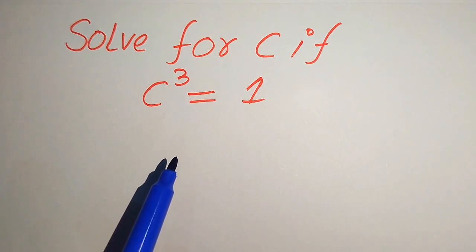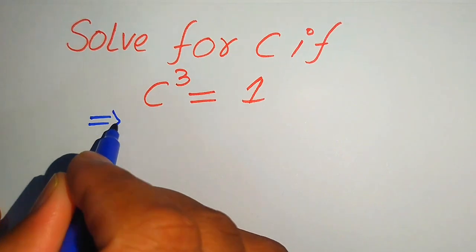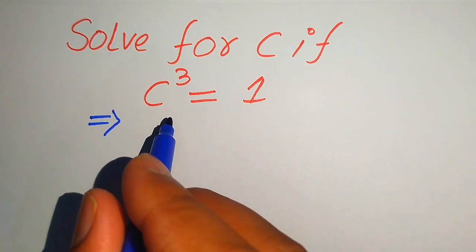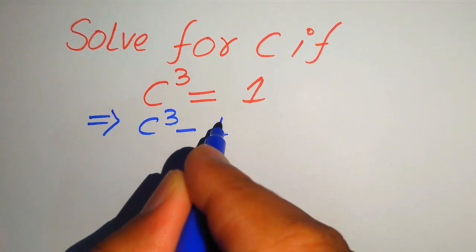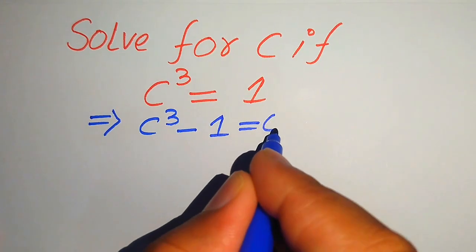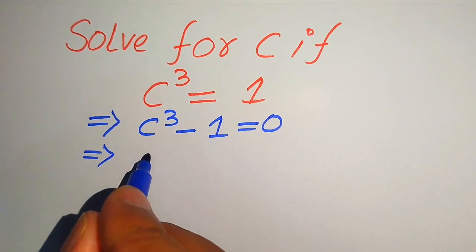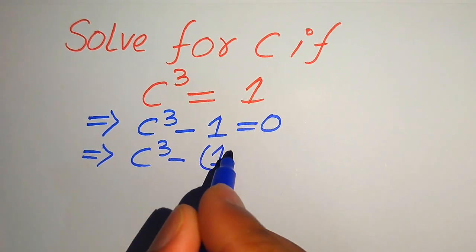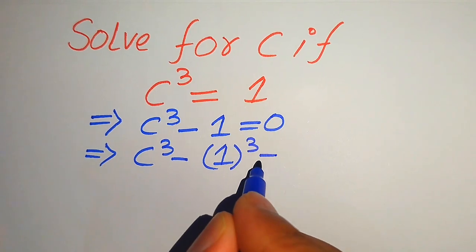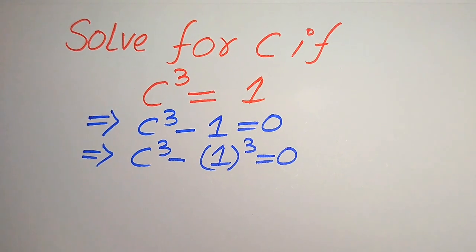The very first thing we are going to do is rearrange the terms. We move 1 from the right hand side to the left hand side, and it will be written as c cubed minus 1 equals to 0. We rewrite this equation as c cubed minus 1 cubed equals to 0, and we know that the cube of 1 is also equals to 1.